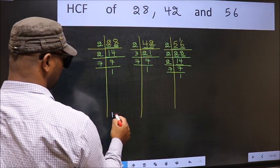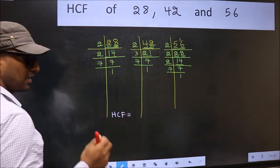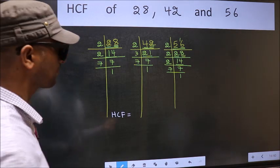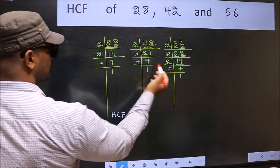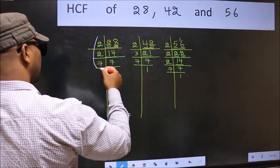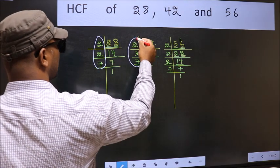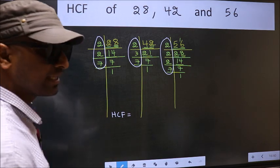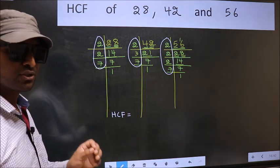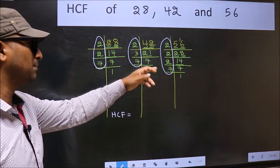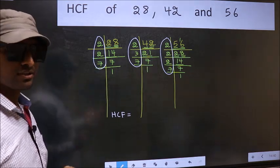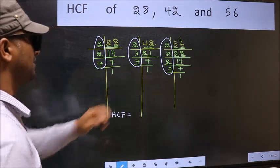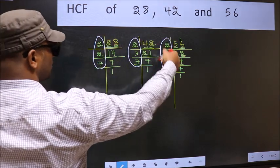Therefore, our HCF is... HCF is the product of numbers which should be present in these 3 places. I repeat, HCF is the product of numbers which should be present in these 3 places. So now, let us find the numbers which are present in these 3 places. Here, here and also here.